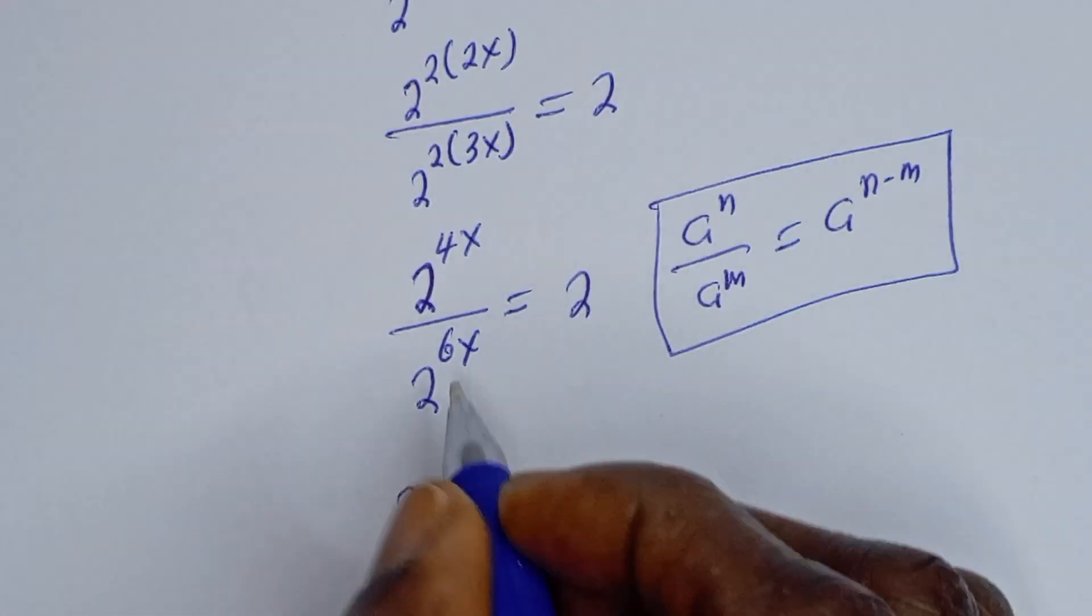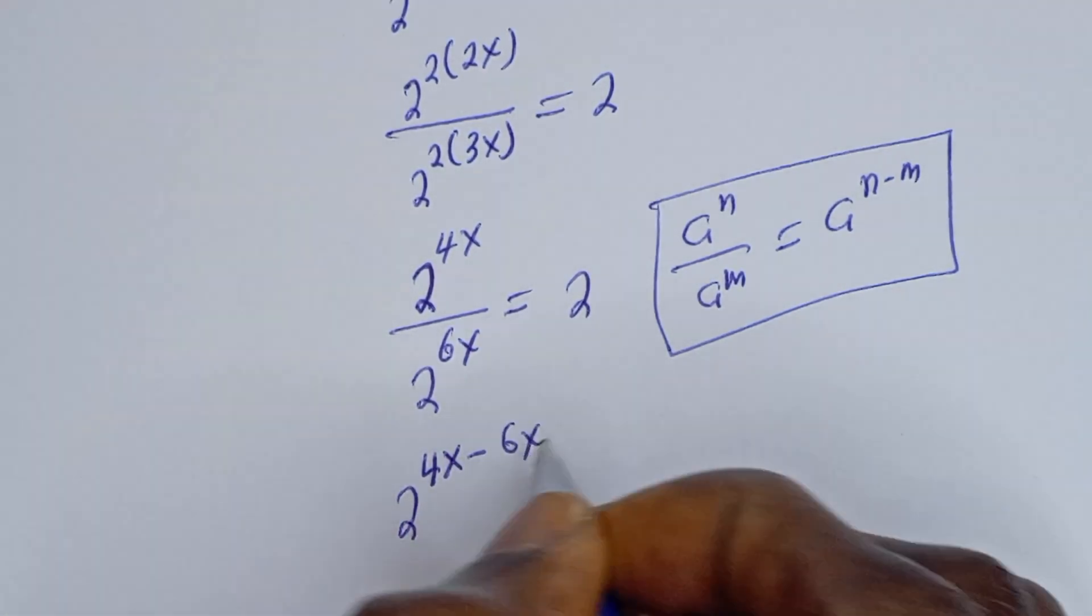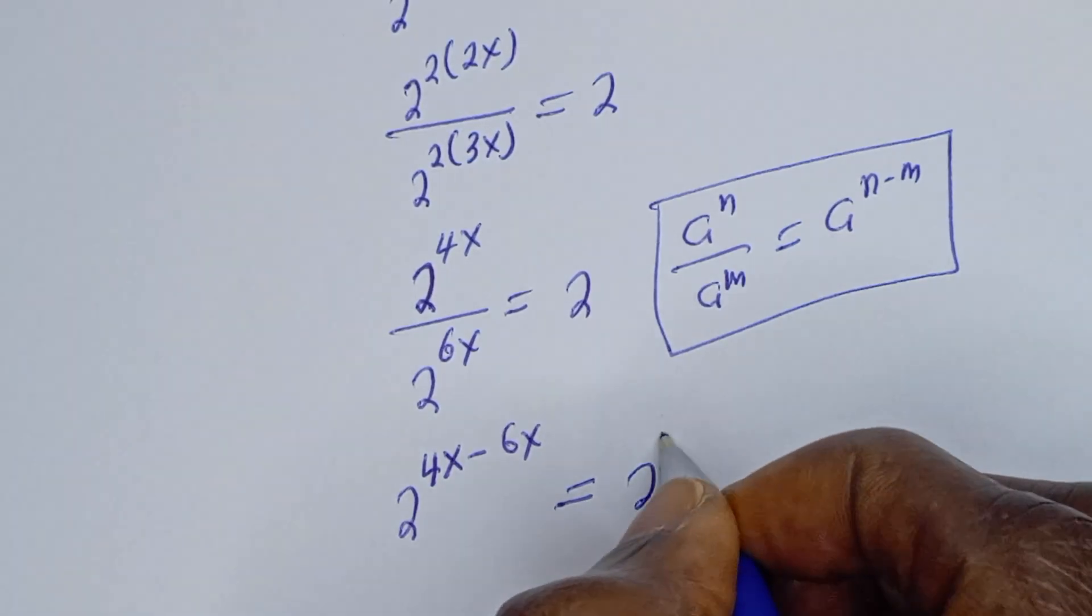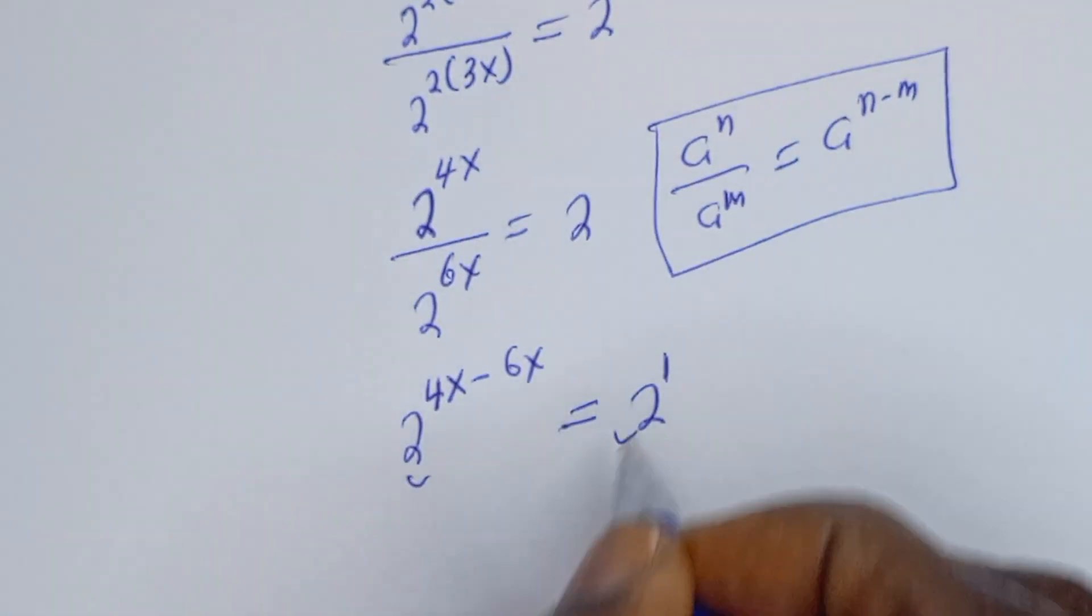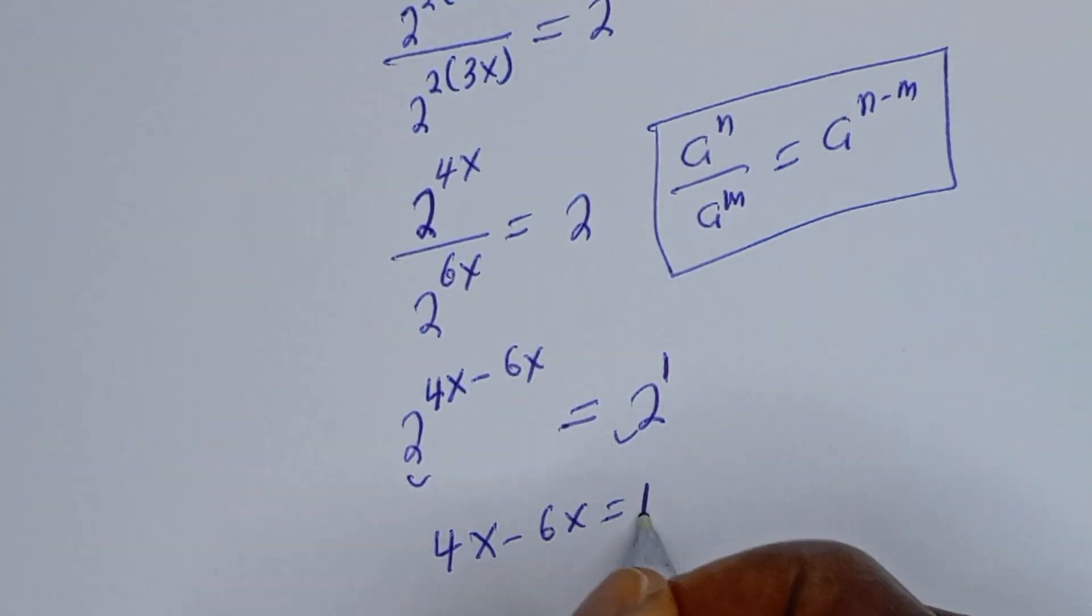Here is 2 to the power of 4s minus 6s is equal to 2. And this is the same thing as 2 to the power of 1. We have the same base 2, so 4x minus 6s is equal to 1.